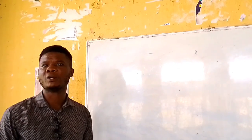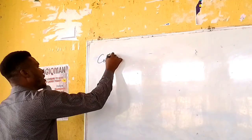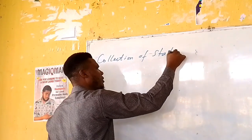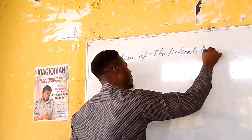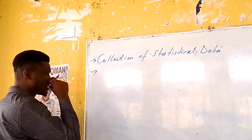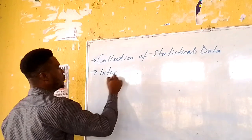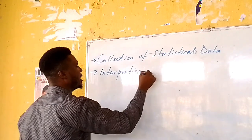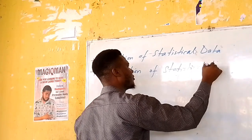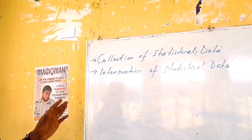Particularly, we were looking at statistical data. What we did not discuss in the last class was how to collect statistical data. We had explained what statistical data means and were left with these two: collection of statistical data and interpretation of statistical data. This will be the focus of today's class.